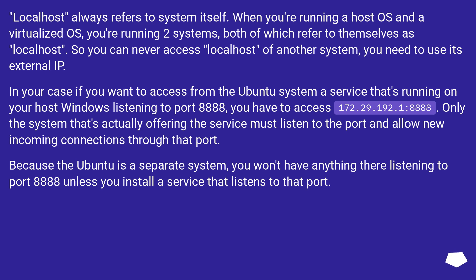Localhost always refers to the system itself. When you're running a host OS and a virtualized OS, you're running two systems, both of which refer to themselves as localhost. So you can never access the localhost of another system — you need to use its external IP. In this case, to access from Ubuntu a service running on Windows listening on port 8888, you need to access 172.29.192.1:8888. Only the system offering the service must listen on that port; Ubuntu won't have anything listening on 8888 unless you install a service there.